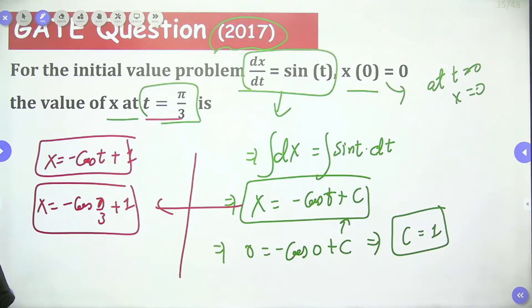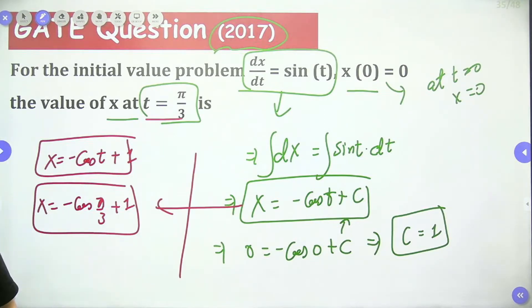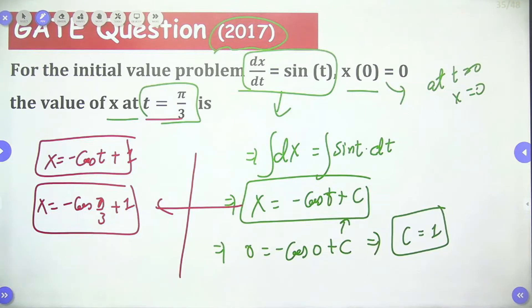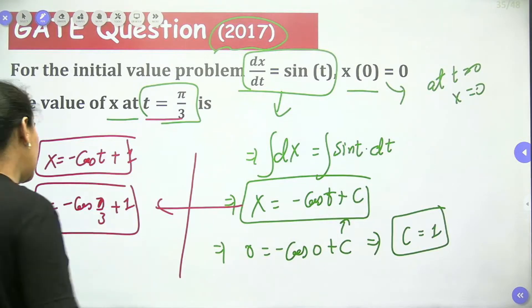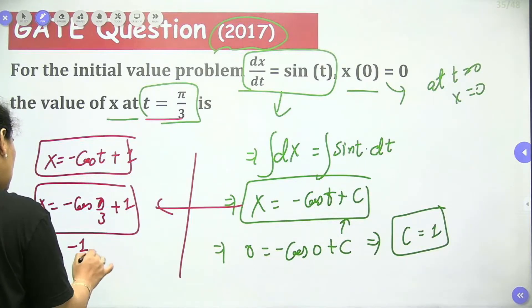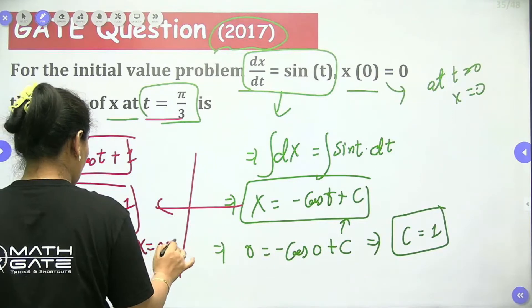So, exactly, we don't have an option in that particular question. So we have to convert this into simple form only. We can leave it here only. If you want, you can go for the solution. So, cos(π/3) means cos 60, which is 1/2. So it will be minus 1/2 plus 1. So x will be 0.5 only.